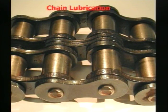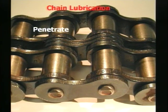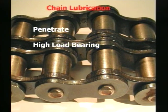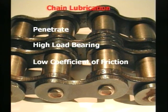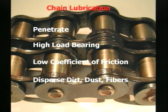One of the most common methods to transmit power is with an industrial pin and bushing chain. To achieve the lowest cost of ownership, the chains need to be periodically lubricated. The required properties of an effective lubricant include the ability to penetrate, high load bearing properties, a low coefficient of friction, and the ability to disperse dirt, dust, and fibers.